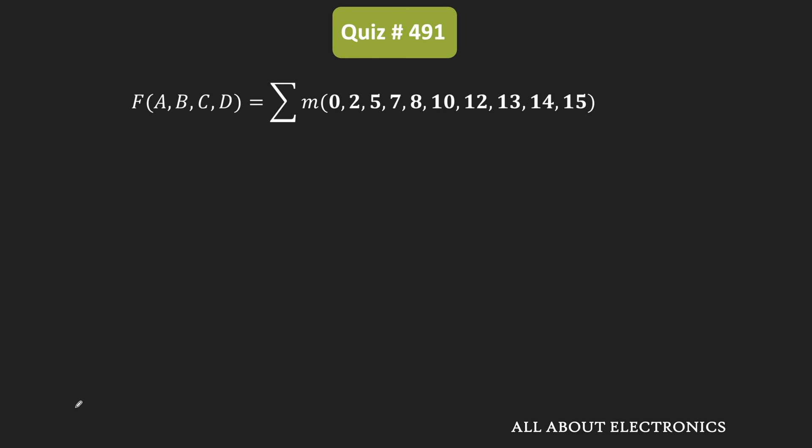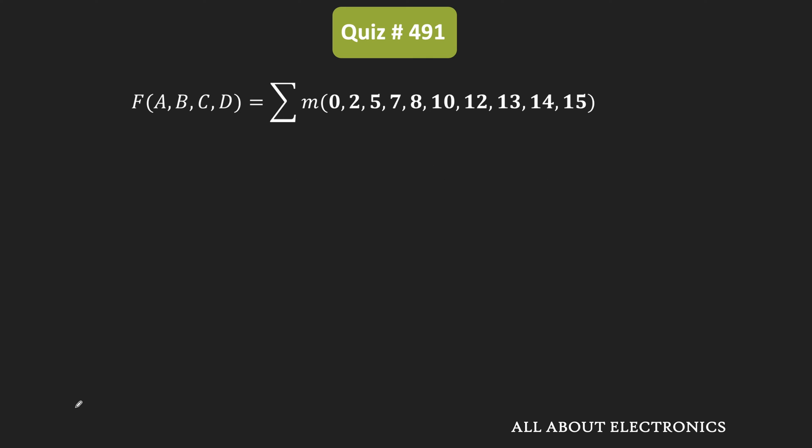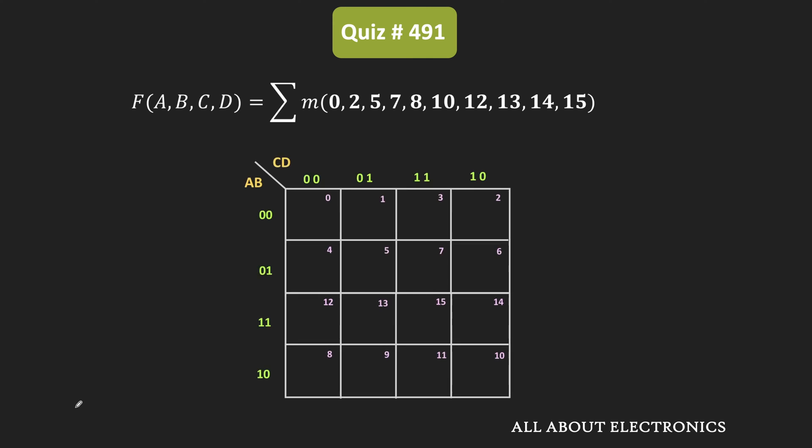This function is given in the SOP form. First of all, let us write down all the minterms that are present in the function in the K-map. As you can see, this function is equal to 1 for 10 different minterms, and all these minterms are represented in the K-map. By making groups of 1s, let us try to cover all the minterms.